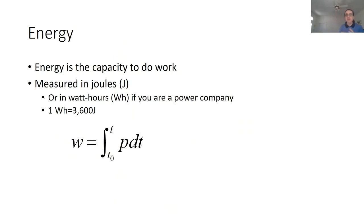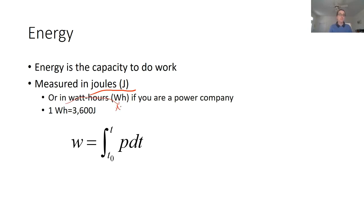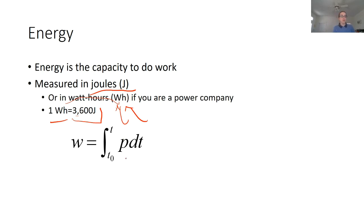The next thing we're learning about is energy. Energy is the capacity to do work — in other words, how much work can we do? The unit of energy is joules. In the world of electricity, we also use watt hours, which is just watts times the number of hours. Power companies use this because there are a lot of seconds in a day and year and the numbers would be really high. So 3600 joules is equal to one watt hour, and those numbers are a lot smaller. The formula to define energy is that energy equals the integral of power over time.